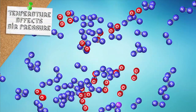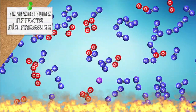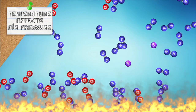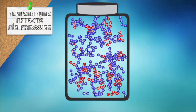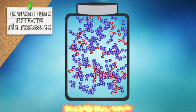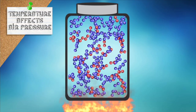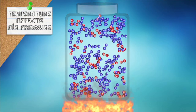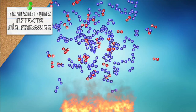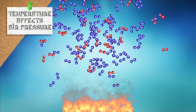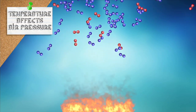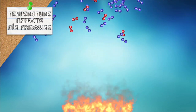Air pressure also changes with temperature. When air is heated, it expands, making it less dense. In a closed container, that will increase the air pressure on the inside of the container. But in the atmosphere, where the air can expand freely, as the air is heated, it becomes less dense and rises, and the air pressure becomes lower.